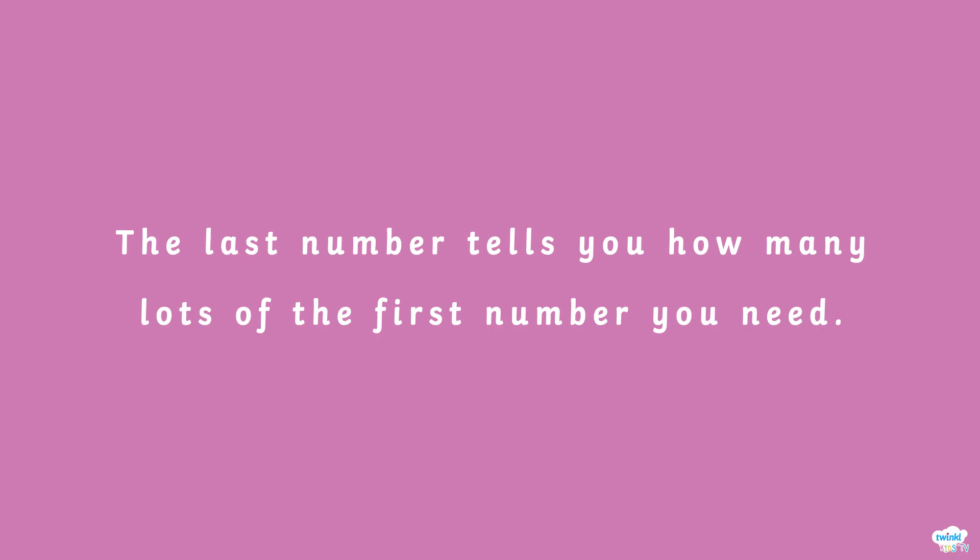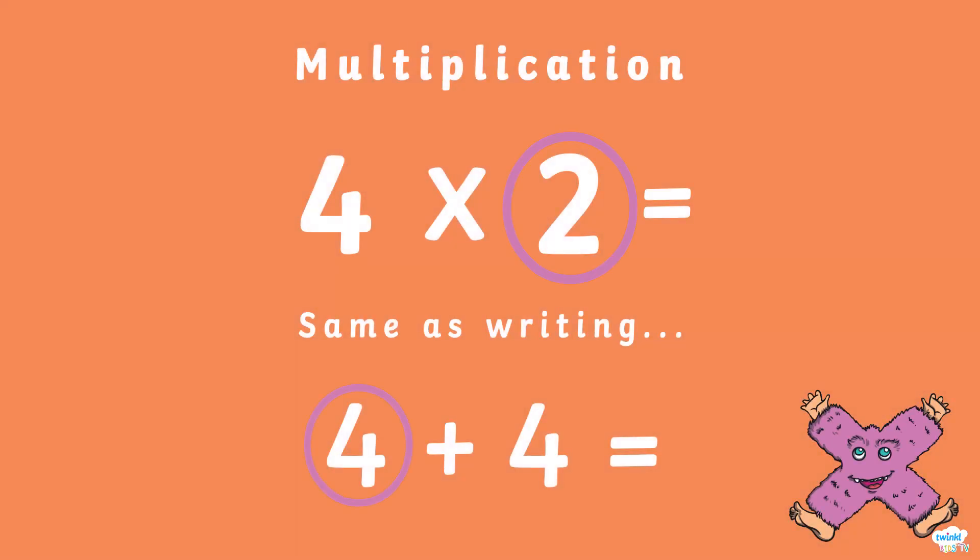The last number tells you how many lots of the first number you need. Here we can see that we are timesing 4 by 2, so that is how many 4s we have to add up to find the answer.